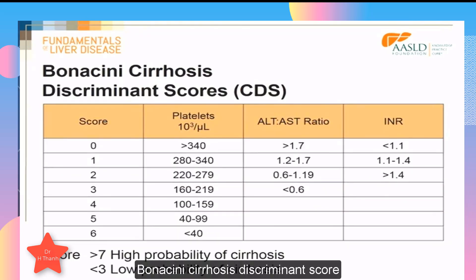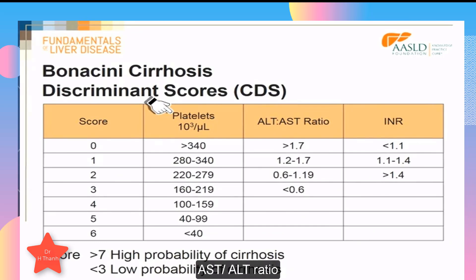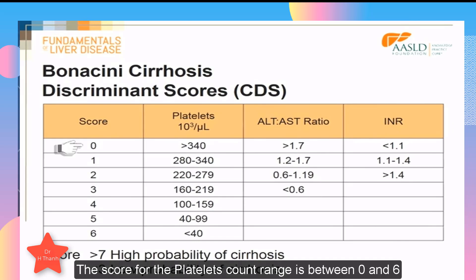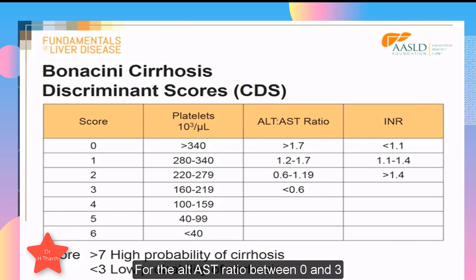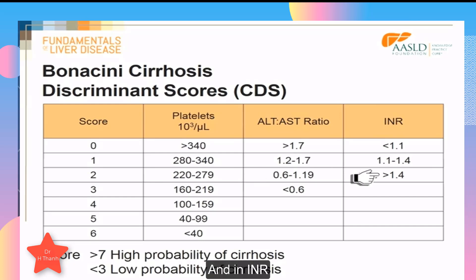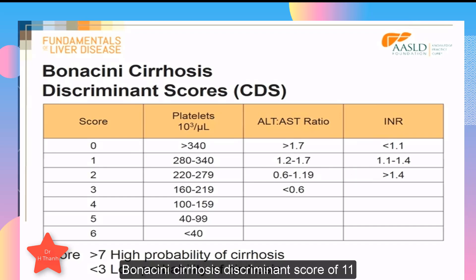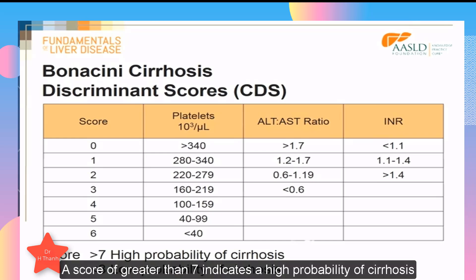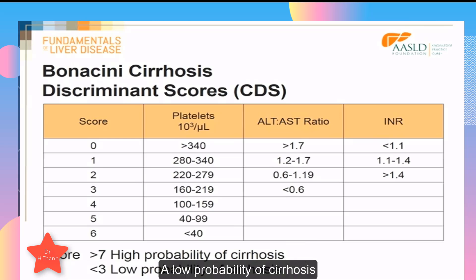The Bonaccini cirrhosis discriminant score uses the platelet count, ALT-to-AST ratio, and the INR. The score for the platelet count ranges between 0 and 6, for the ALT-AST ratio between 0 and 3, and for the INR between 0 and 2. For example, a patient with a platelet count of 40,000, an ALT-AST ratio of 0.6, and an INR of 1.4 has a Bonaccini score of 11, very likely to have cirrhosis. A score greater than 7 indicates a high probability of cirrhosis, and a score less than 3 indicates a low probability.